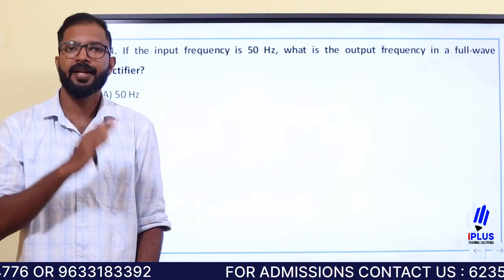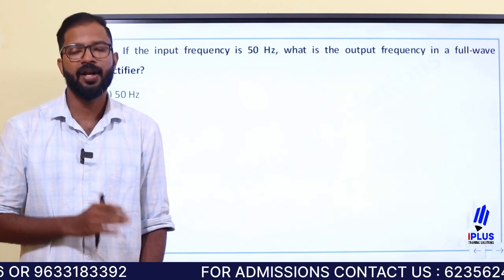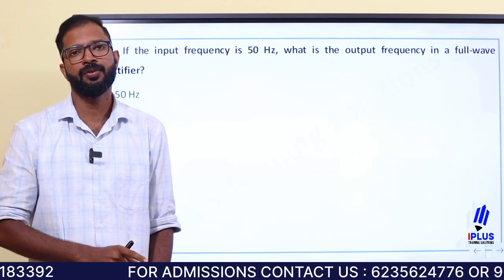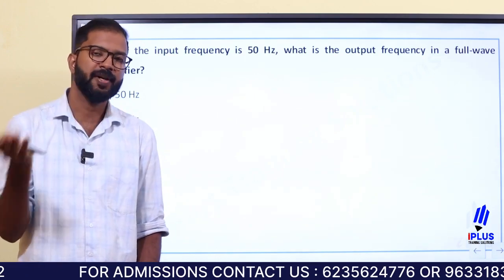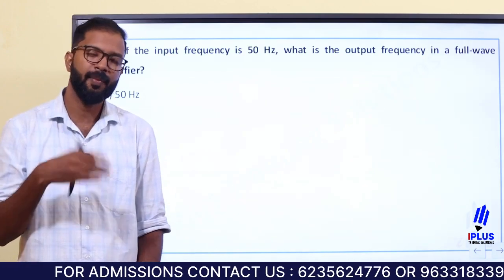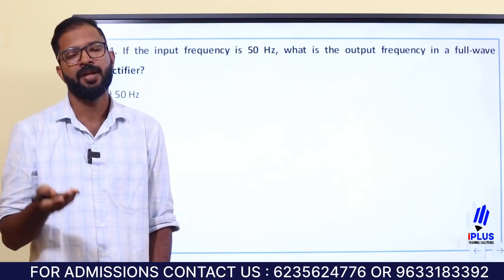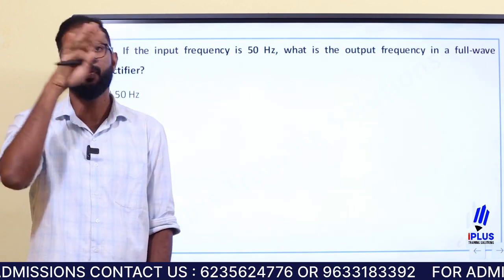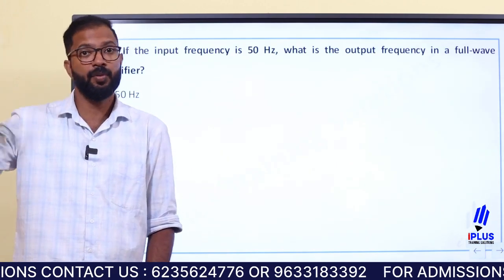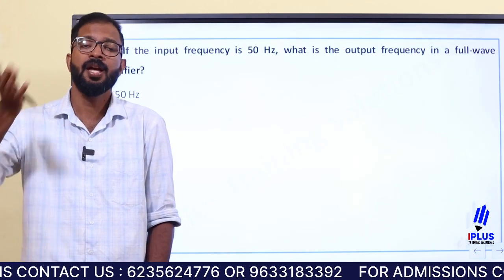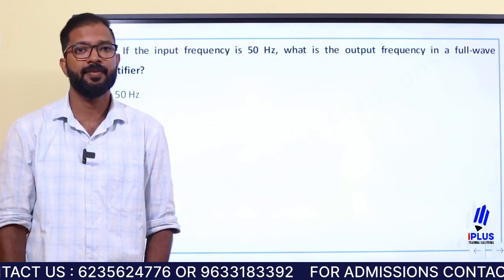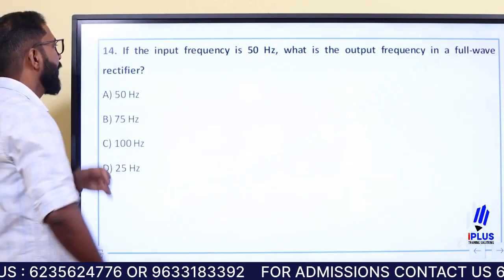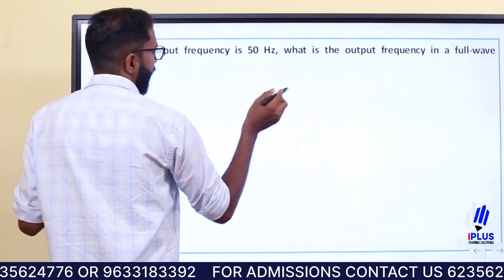In a full wave rectifier you use 2 diodes. A half wave rectifier gives 1 portion per cycle, while a full wave rectifier gives 2 portions per cycle. A full wave bridge rectifier uses 4 diodes. The output has both halves of the input, so output equals 2 parts upward per input cycle.